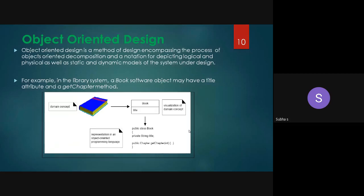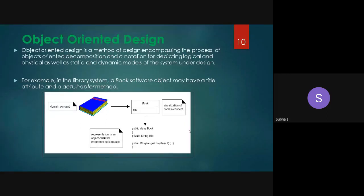It is not like we need to worry about code at all — we are going to do only the design part, drawing different kinds of diagrams. For those diagrams we have to remember some notations. This rectangular box shows the name of the class at top, below that the attributes for the particular class, and below that the functions. A book is a software object: it has 'title' as an attribute and 'getChapter' as a method or function. Like this, you have to draw for all the objects — first identify the objects for your domain, then write the attributes and functions.